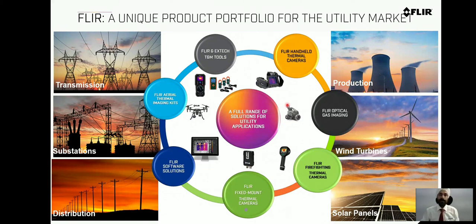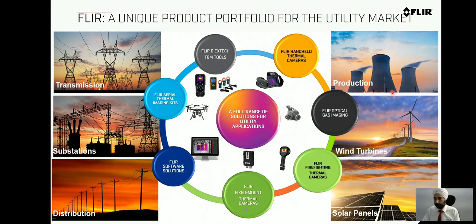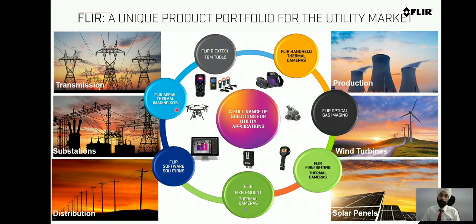The same utilities — whether production, generation, substations, transmission, distribution, solar panels, or wind turbines — also have firefighting departments, and products are available for those applications too. Fixed-type cameras for 24/7 use in substations are also possible. For solar panel applications, drone-mounted cameras are also available under the Flare brand. This complete structure of products is available for utilities.